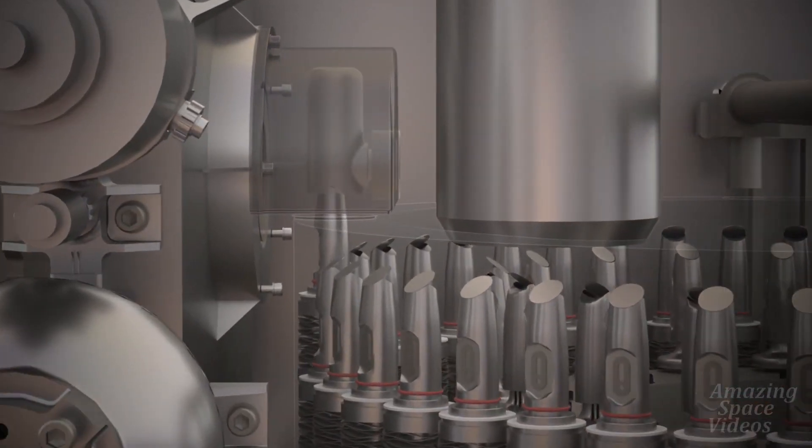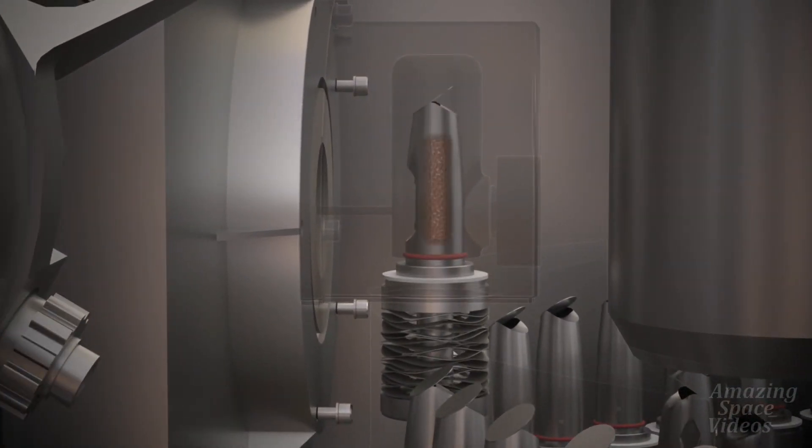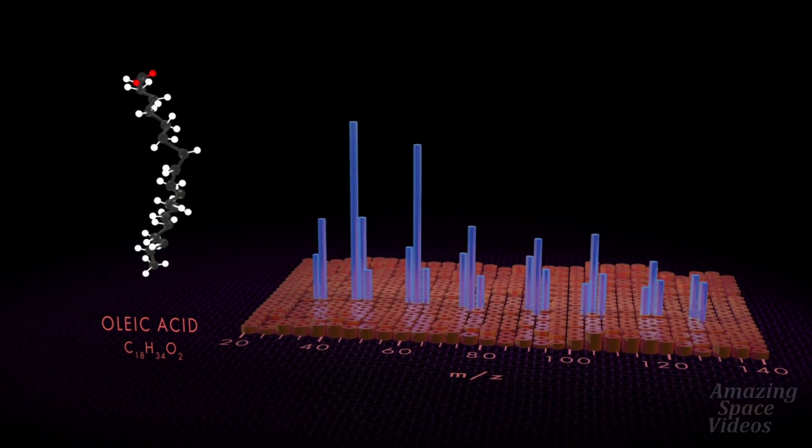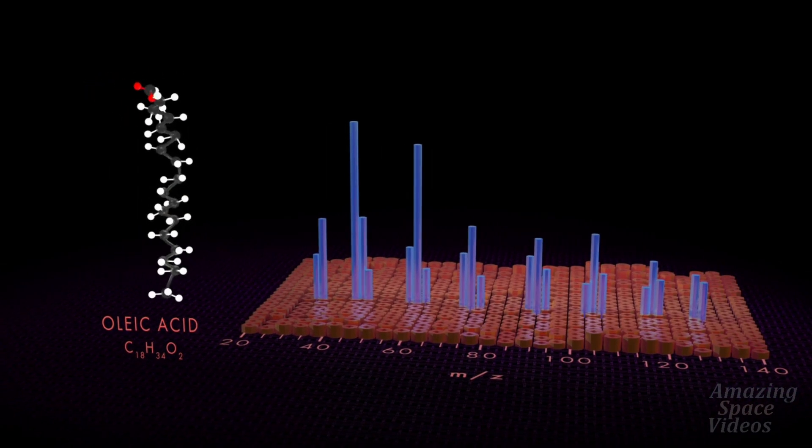Pulses from a laser release large organic molecules from the surface sample for analysis in the mass spectrometer. The mass spectrometer sorts molecules by mass and measures diagnostic fragments that tell Dragonfly the kinds of chemical components that are present in the surface and whether there are molecules of prebiotic interest.